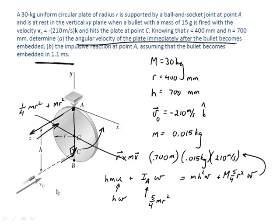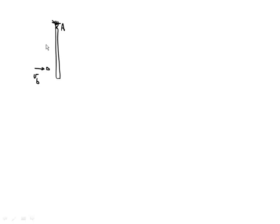We started this problem during the last lecture and got to a stopping point. So let's go ahead and finish this problem up. Let's take a side view. We've got this plate attached at the top by a ball and socket — we'll refer to that as position A. The bullet comes in with some initial velocity V of the bullet and strikes a distance H below position A.